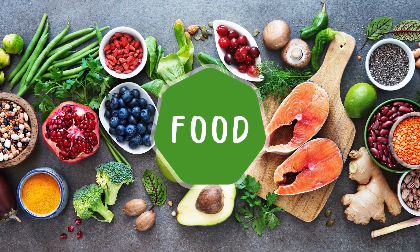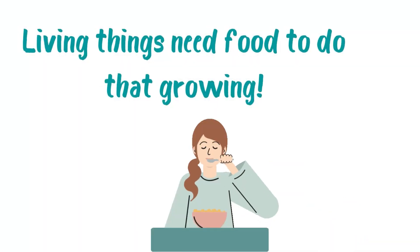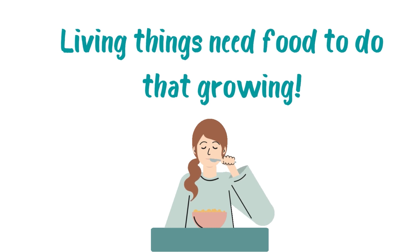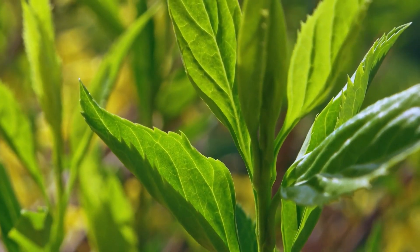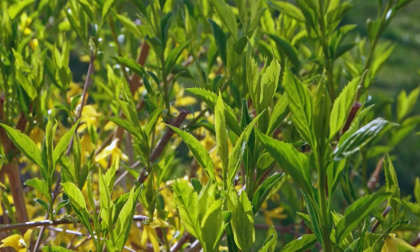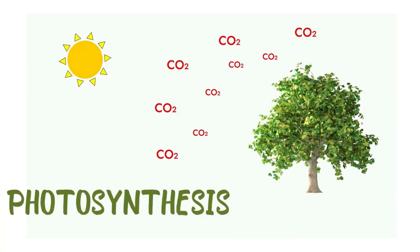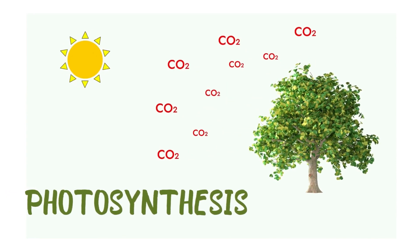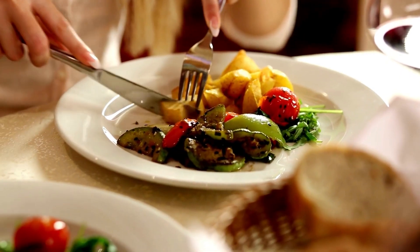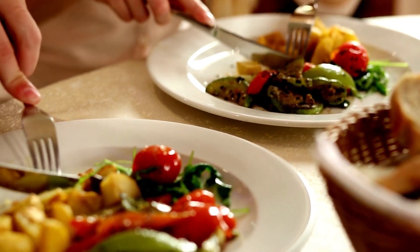The final thing we want to think about is food. Remember how living things grow? Well, living things need food to do their growing. Like all living things, plants need food too. Plants use sunlight to make their own food — it's called photosynthesis. Photosynthesis is how plants use sunlight to make their own food, but they don't eat like us — they just absorb it.